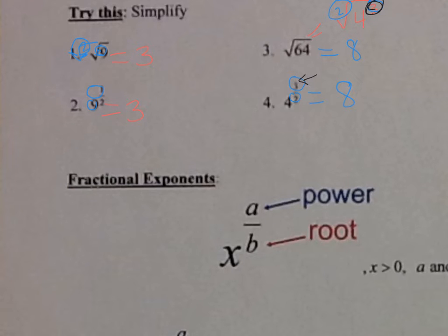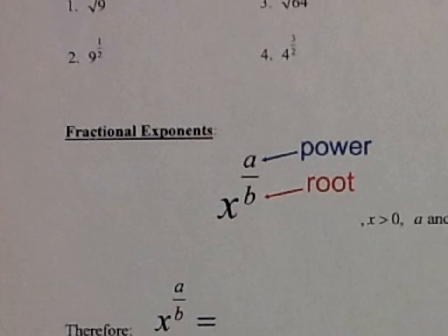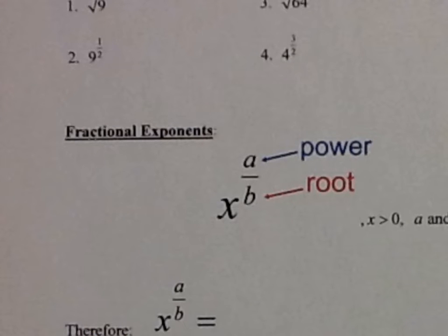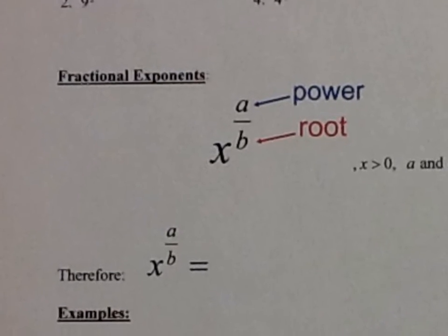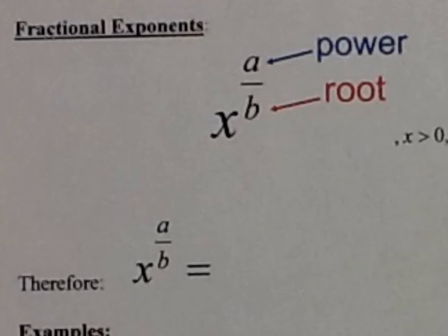So the number in the denominator is always your root — what's inside the radical. Let's write down that rule for fractional exponents.